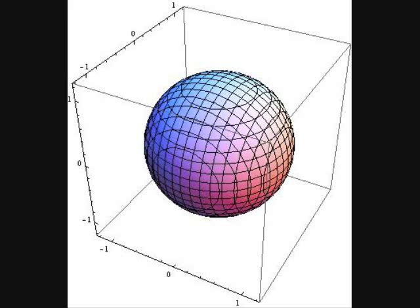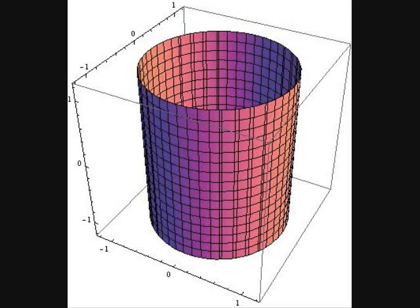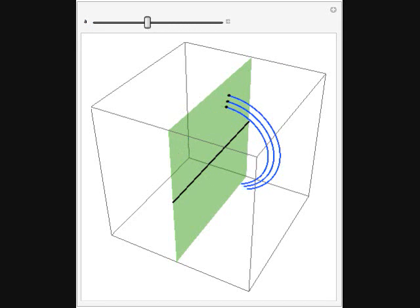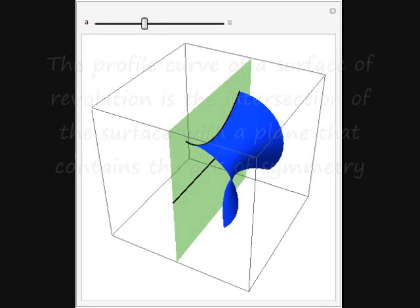Spheres and cylinders are the most basic examples of surfaces with constant mean curvature. A surface of revolution is foliated by circles. Its profile curve is the intersection of the surface with a plane that contains the axis of symmetry.